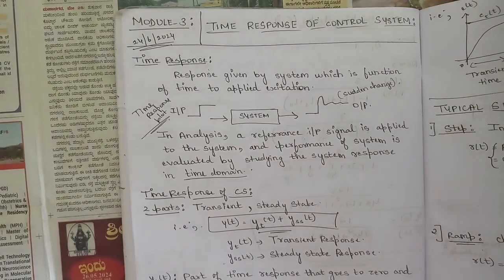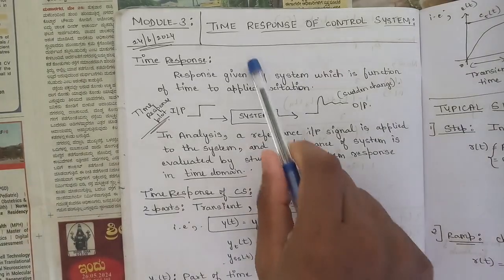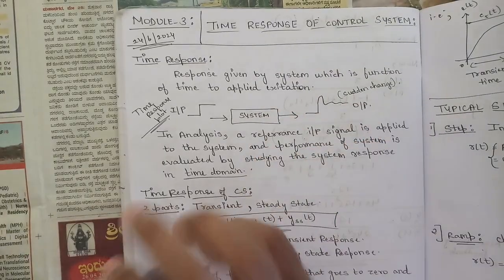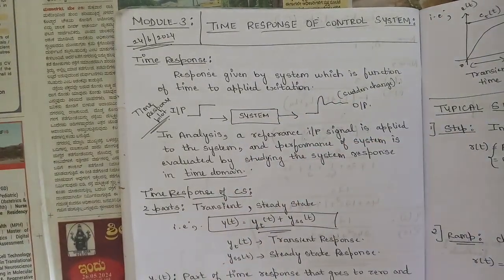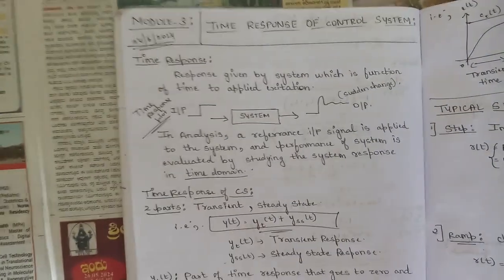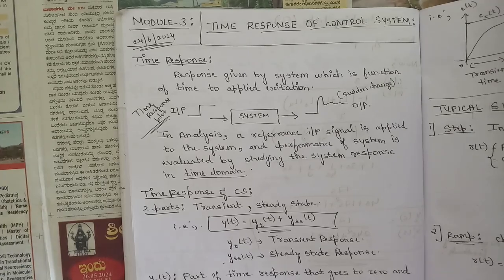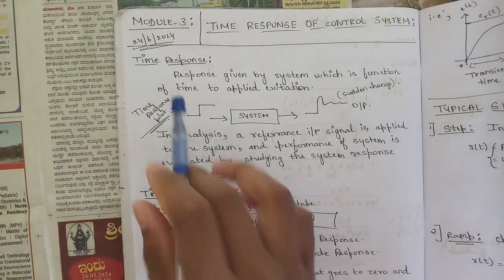Hello everyone. In this session we are going to start with the new module of control systems. We have covered two modules so far. Module 3 is named 'Time Response of Control System.' There are a few concepts to discuss here: time response, typical signals, steady state errors, and so on.